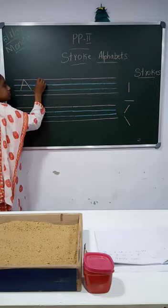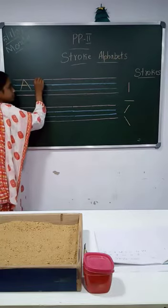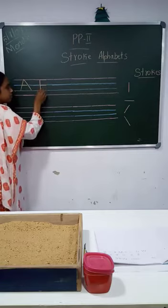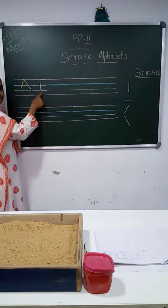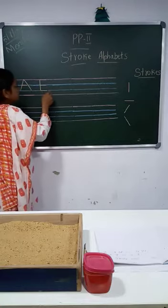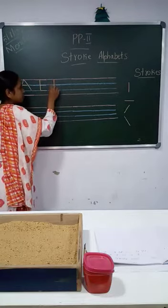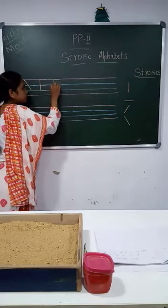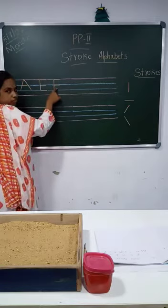Then letter E: standing line, sleeping line at top, sleeping line in middle, sleeping line at bottom — this is letter E. Then letter F: standing line, sleeping line at top, sleeping line in the middle — letter F.